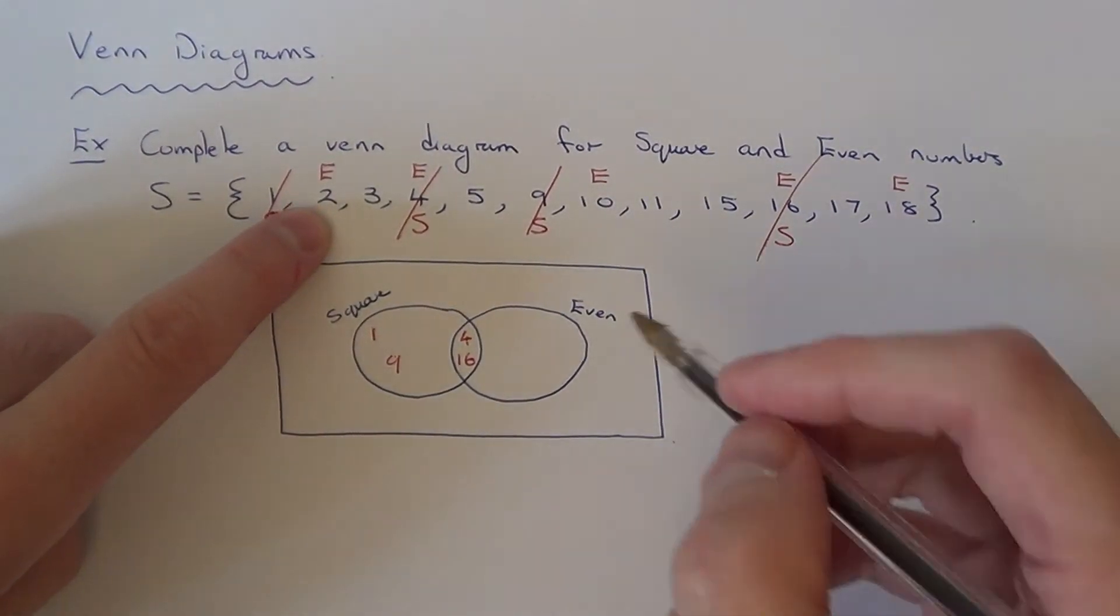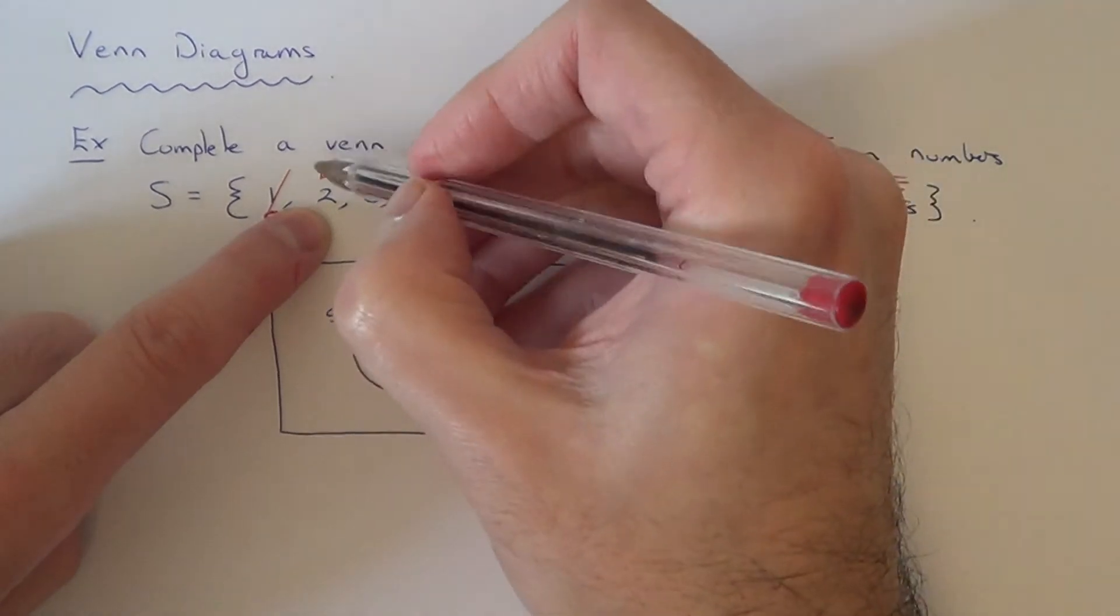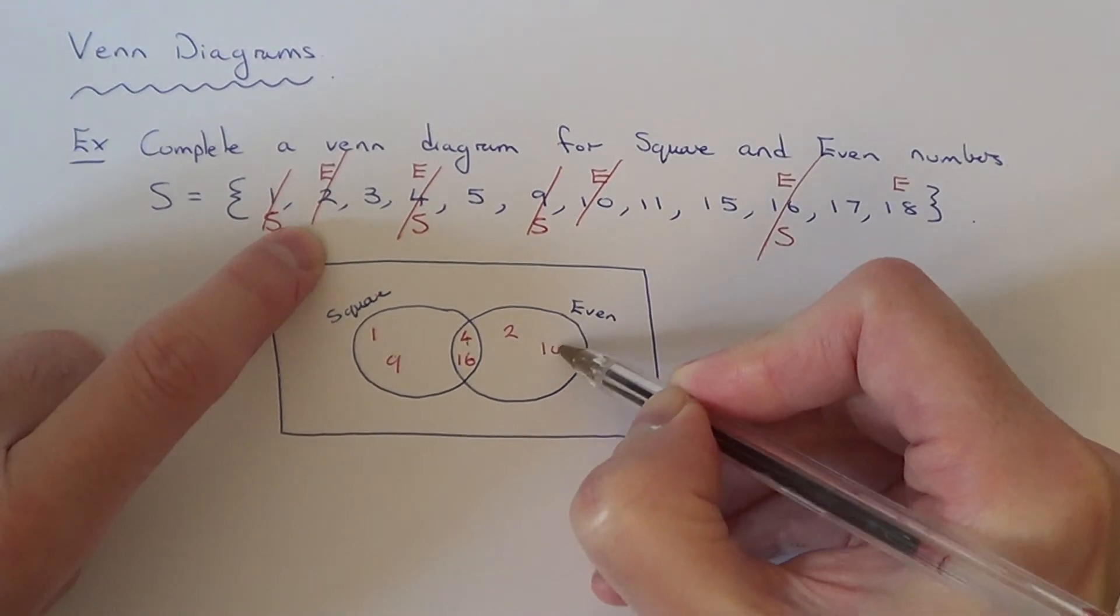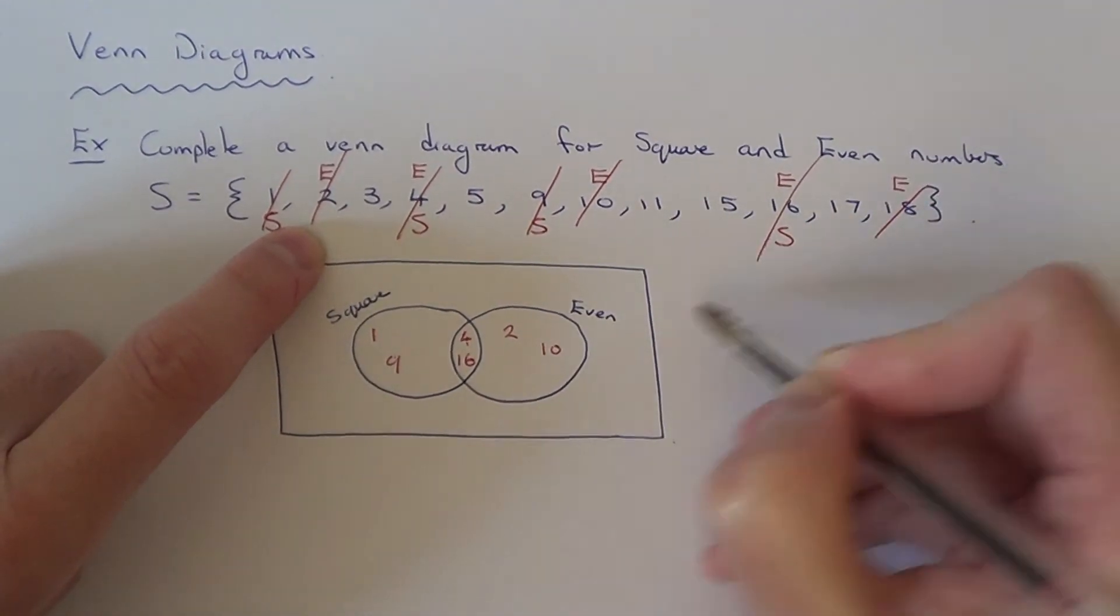And the even numbers then will go here. So we've got number 2, we've got number 10 and we've got the number 18.